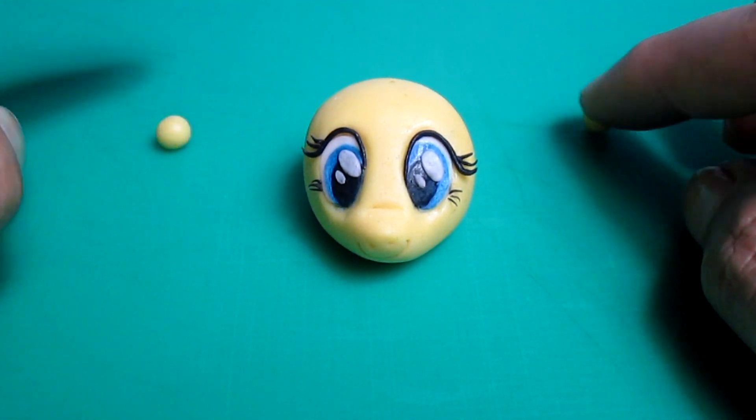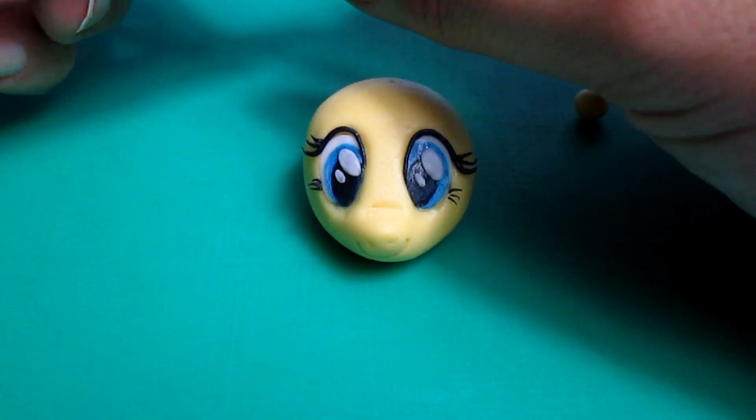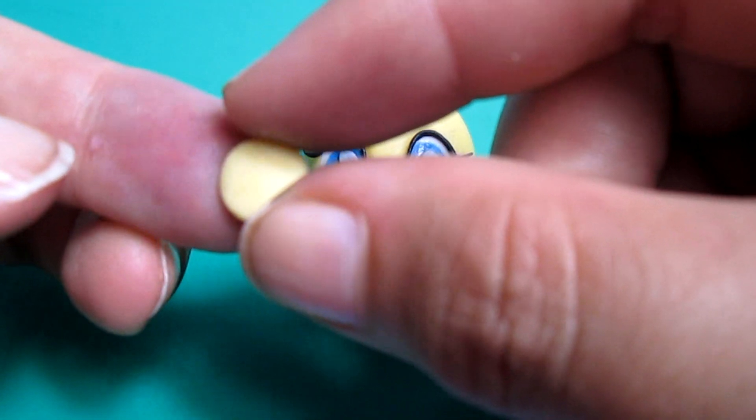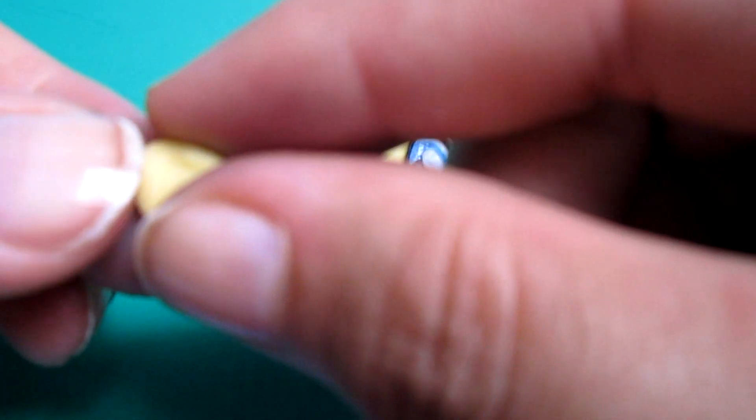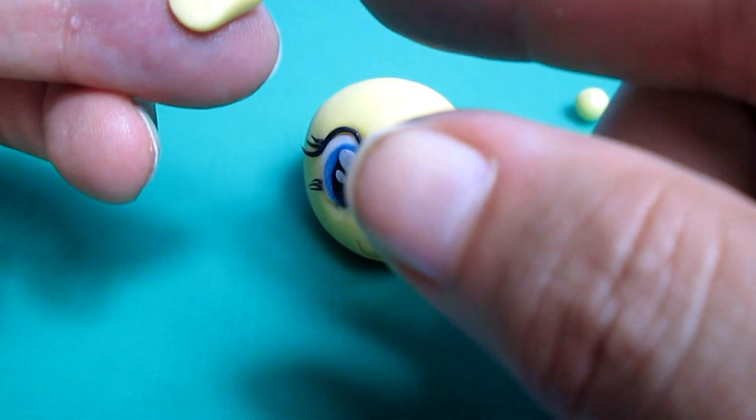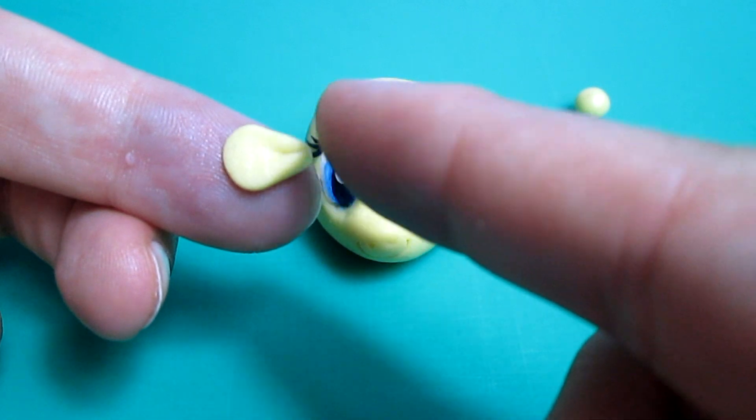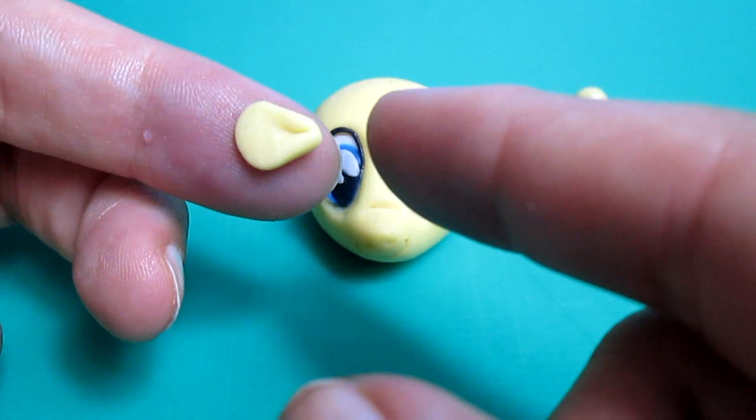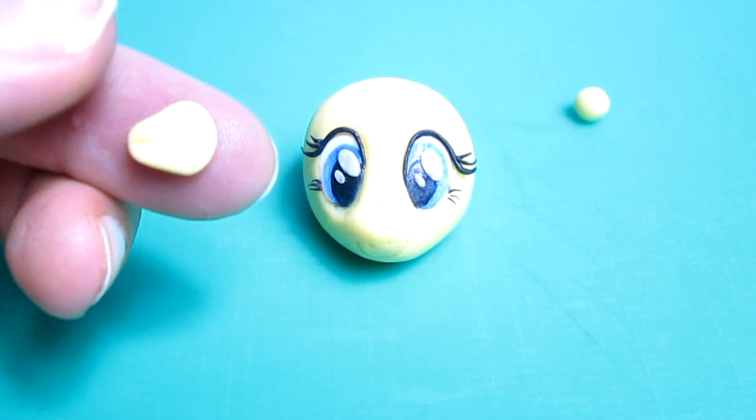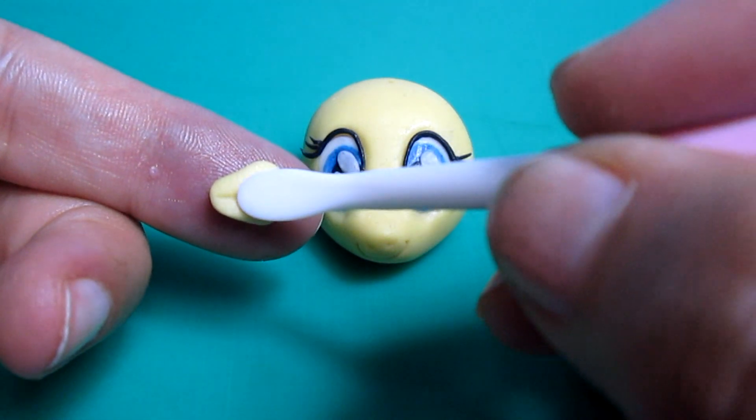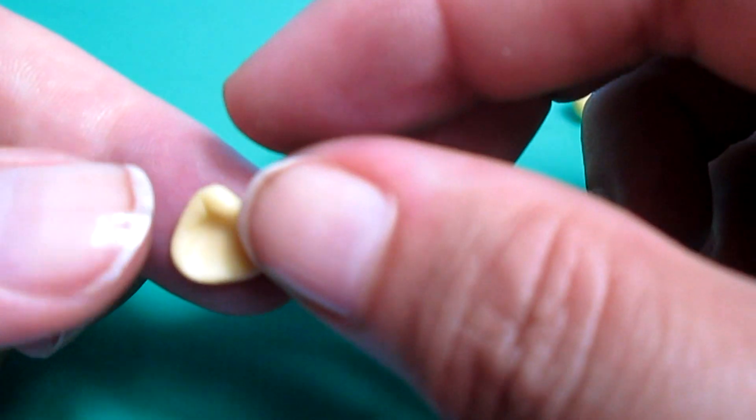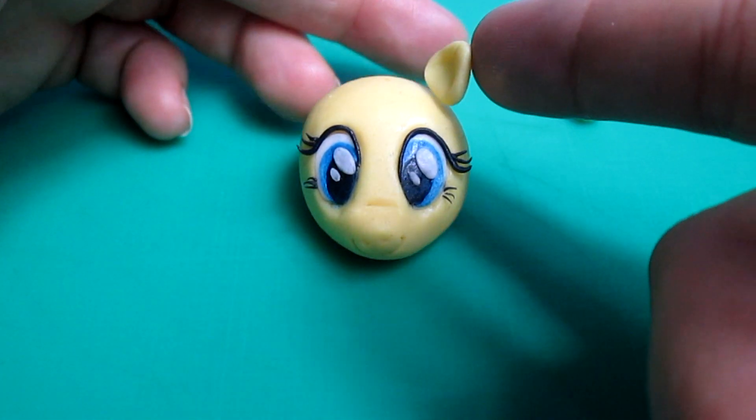To make the ears we're going to need two balls of yellow fondant and we're going to press it into a kind of triangle. But it hasn't got a point here so we have to press a little bit. Now with the leaf shaper we're going to make the inside of the ear. Now we can put it on the head.